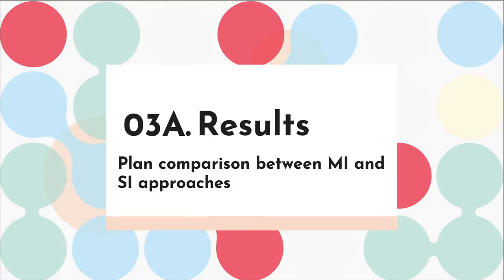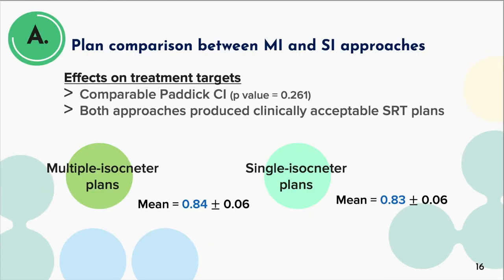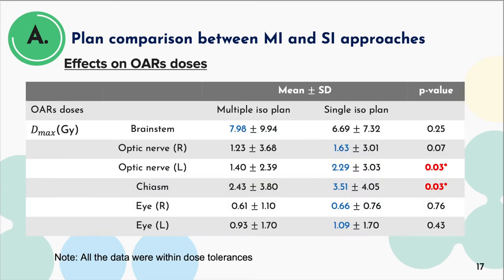The following are the results for Part 1 of the study. In terms of target conformity, mean CI of SI plans (0.83) was comparable to that of the MI plans (0.84). For the OAR doses, the majority showed higher mean Dmax in the SI plans except for the brainstem, but the overall dosimetric deviations between the two approaches were relatively subtle.